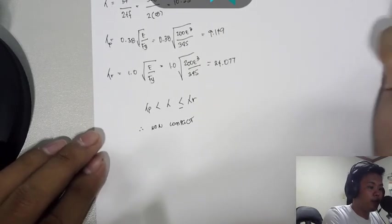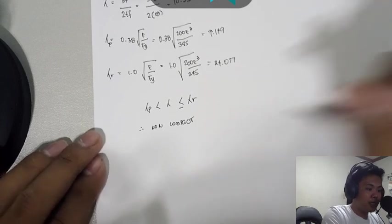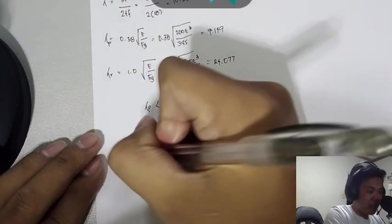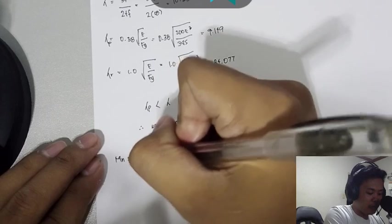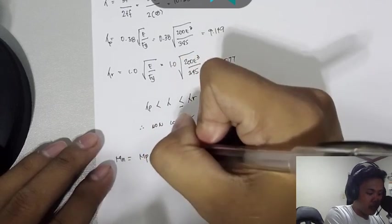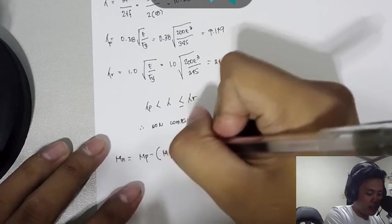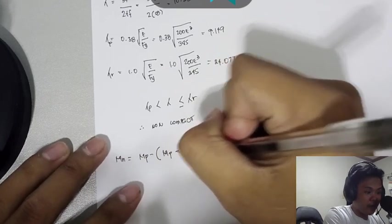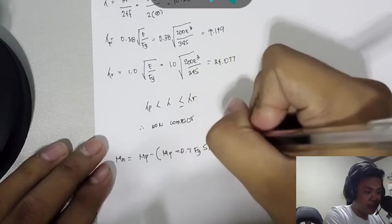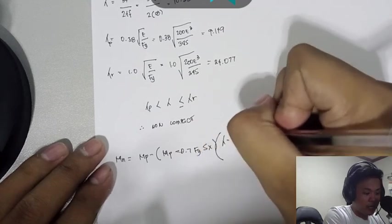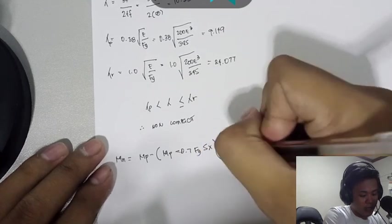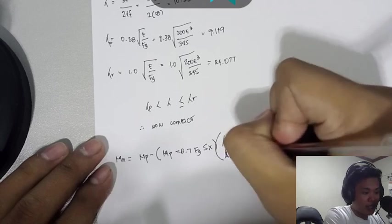From non-compact, since it's non-compact, the value of MN is equals to MP minus, in parentheses, MP minus 0.7 times FY times SX, multiplied by Lambda minus Lambda P over Lambda R minus Lambda P.